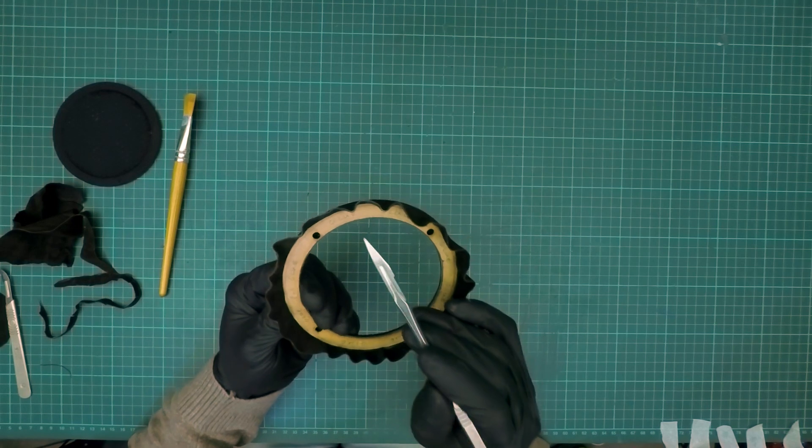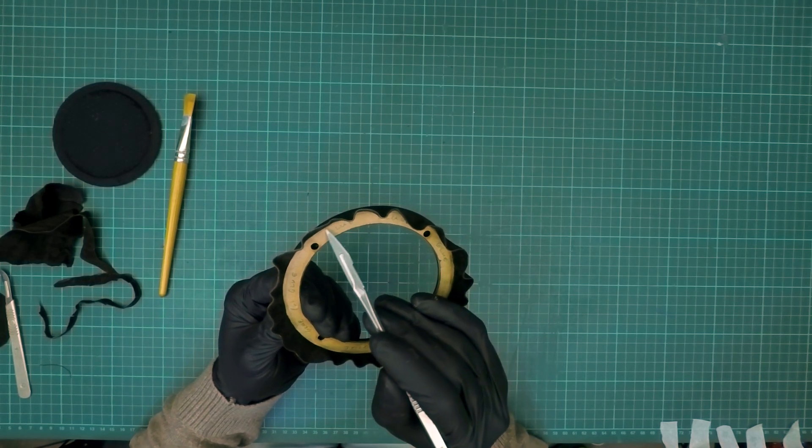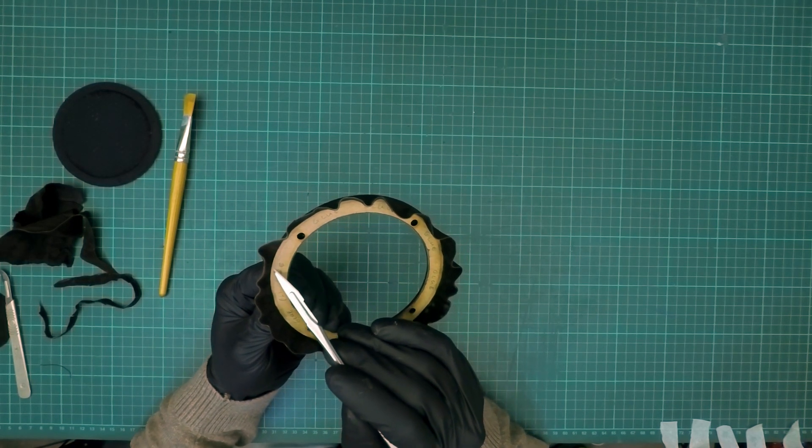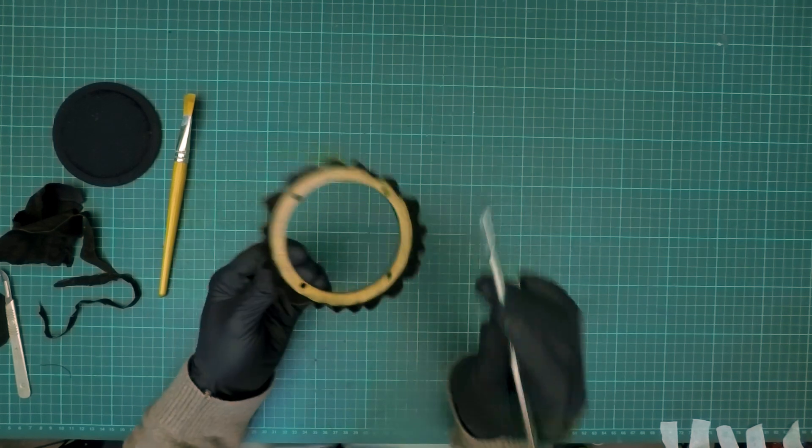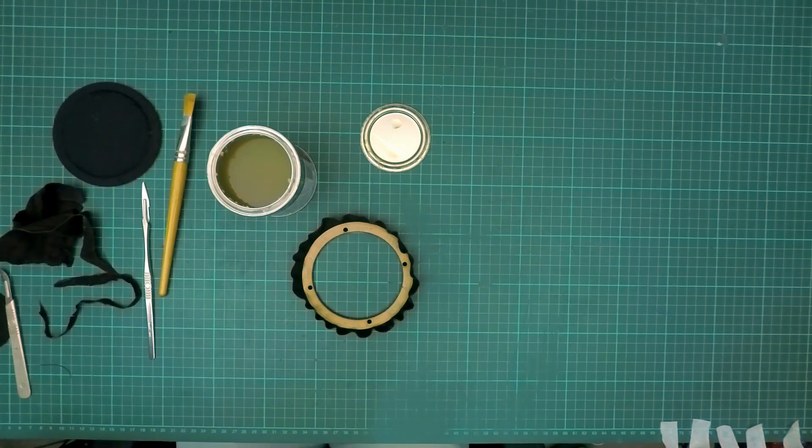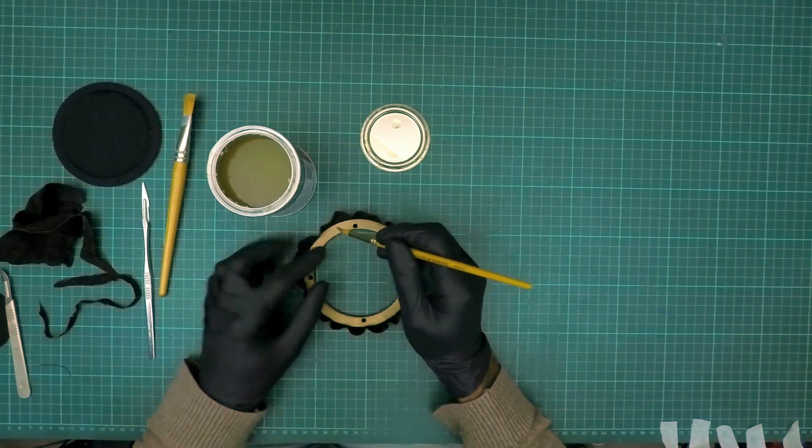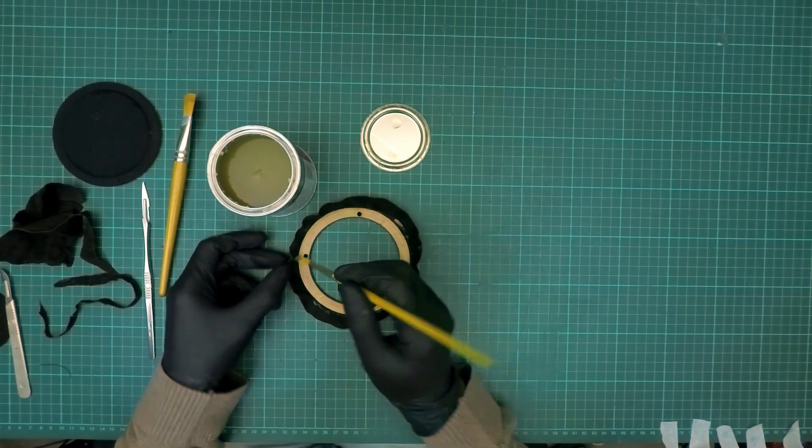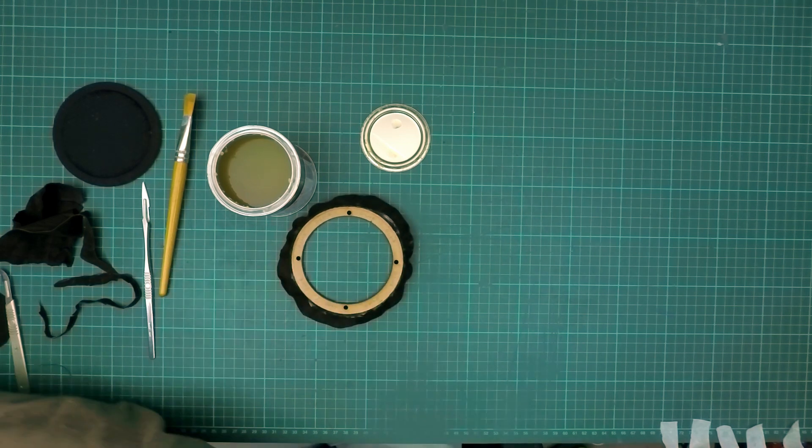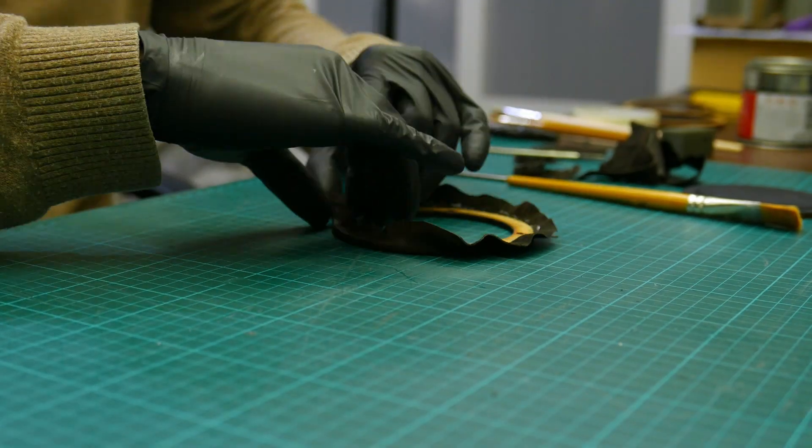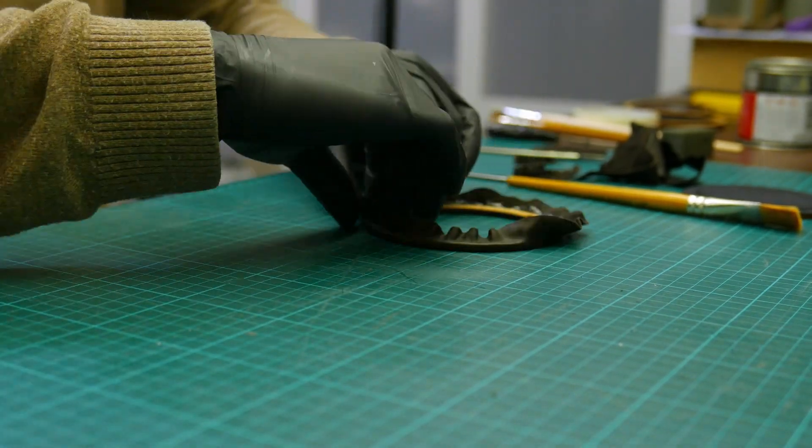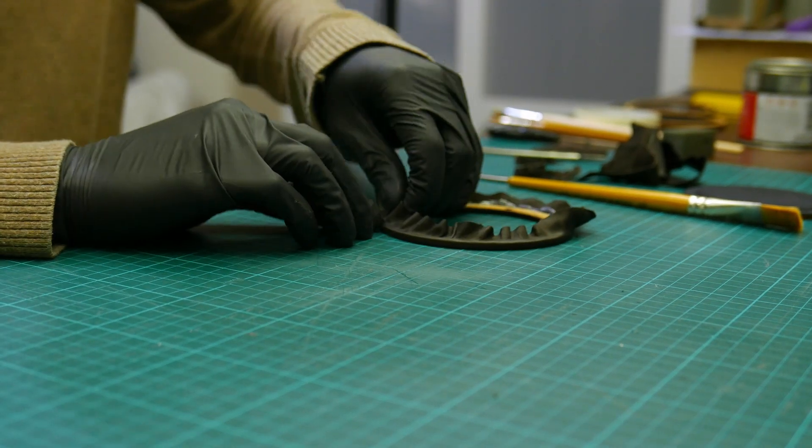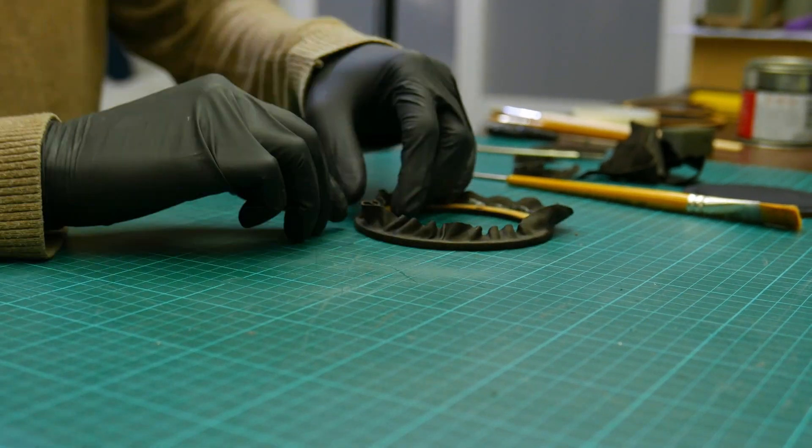We are now going to apply contact cement on the outside of the drawn line, which is on the back of the front ring. Pull the leather to remove any creases and press it firmly to the surface where the contact cement has been applied.